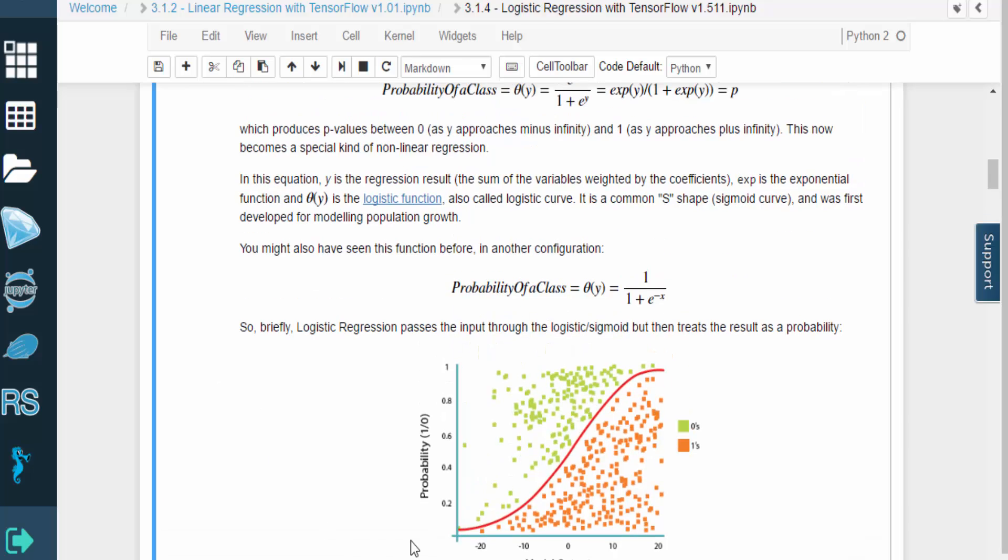Logistic regression provides a formula that predicts the likelihood that a given input belongs to a certain class. The model makes these predictions by analyzing the data's features, which are a set of independent variables that describe the data.